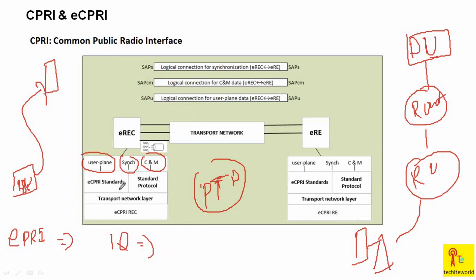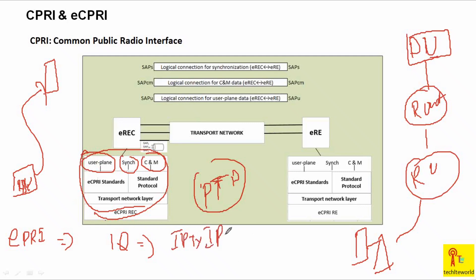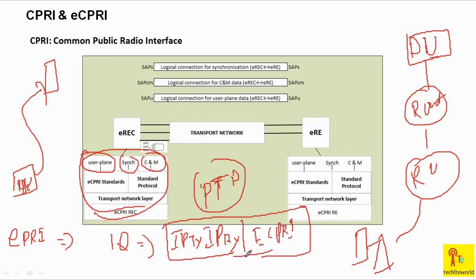PTP stands for Precision Time Protocol - it just syncs our DU and RU to the same time. Control plane data is basically just controlling how IQ data is sent - before sending IQ data you send the control data, which has provisioning information about how to interpret the IQ data. This thing is embedded in the eCPRI protocol message, and for transport we use either Ethernet or internet protocol.